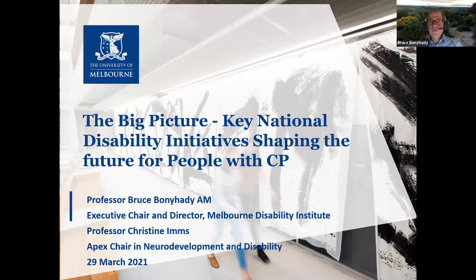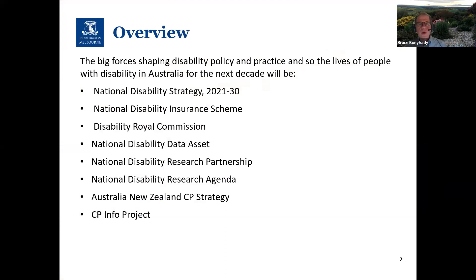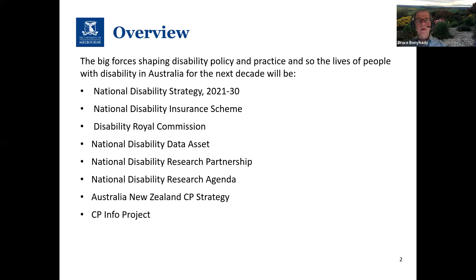Let me start with some of the big factors that are going to shape the policy and practice for people with disability. They are the National Disability Strategy, which is the second strategy we've had, running from this year to 2030, the National Disability Insurance Scheme, the Disability Royal Commission, the National Disability Data Asset, and the National Disability Research Partnership. Christine is going to talk about the National Disability Research Agenda, the Australian New Zealand CP Strategy, and the CP Info Project.